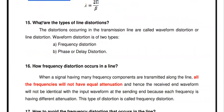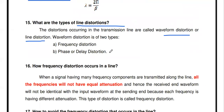What are the types of line distortion? The distortions occurring in a transmission line — also called waveform distortion — are of two types: frequency distortion and phase or delay distortion.